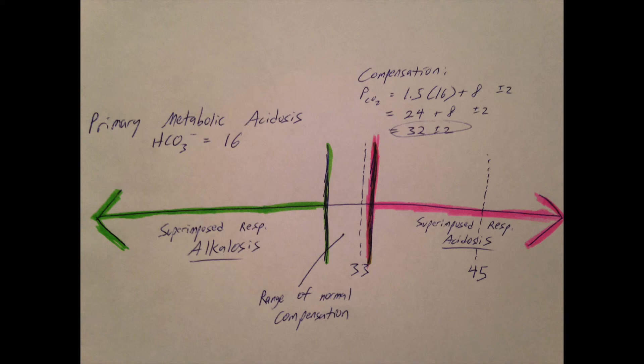In fact, if we get PCO2 values out of these ranges, we know we have a superimposed second pathology. If it's greater than 34, then we also have a respiratory acidosis. If it's less than 30, we also have a respiratory alkalosis.